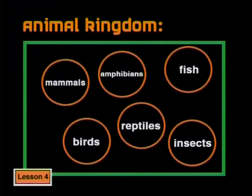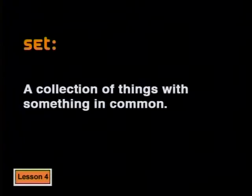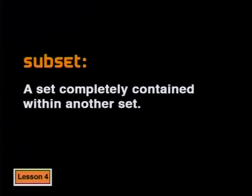Here's a Venn Diagram representing a set of animals. A set is just a collection of things that have something in common. For example, all animals have something in common — they breathe, they eat, they move and so on. But a set of animals can be divided into smaller sets. Each smaller set is called a subset. A subset is a set that is completely contained within another set.